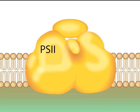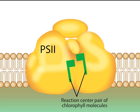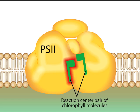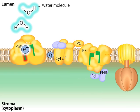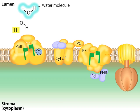Photosystem II contains a special pair of chlorophyll molecules that participate directly in the photolytic reaction. The energy from a photon of light is ultimately funneled to one of these chlorophyll molecules from other antenna chlorophylls not shown here. In the reaction center chlorophyll, the energy boosts an electron to a higher energy orbital. In this state, the electron can be donated easily to an electron acceptor, leaving the chlorophyll molecule oxidized. To replace the electron, Photosystem II strips an electron from a molecule of water. The light-driven separation of an electron from a molecule and its transfer to an electron transport system is called photolysis.